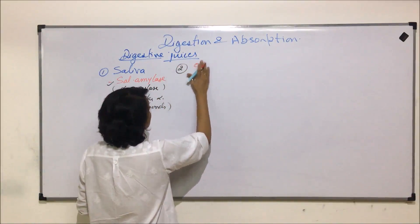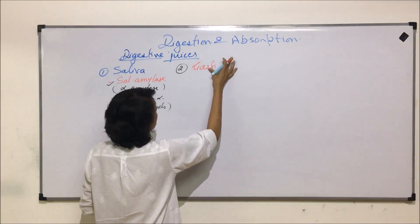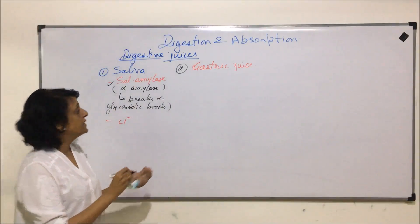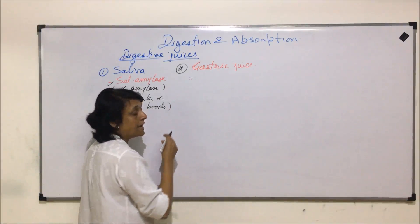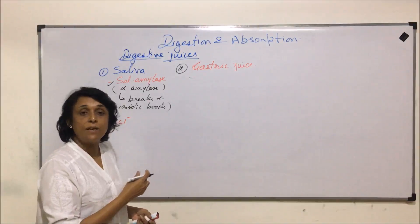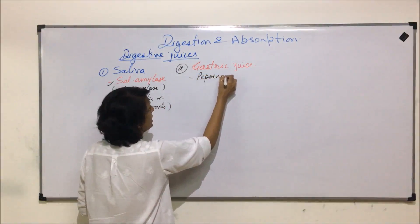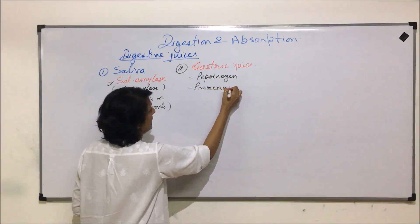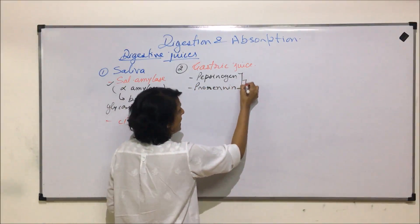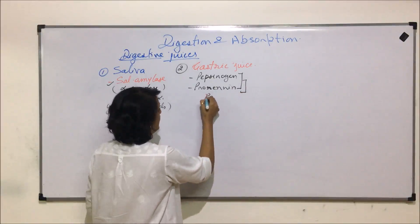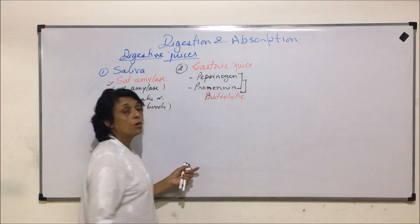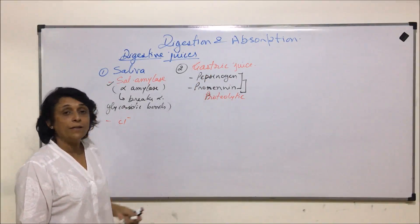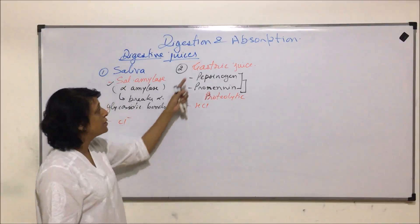The next digestive secretion is gastric juice. In gastric juice, the enzymes are secreted in the form of inactive enzymes or pro-enzymes that need to be activated. These are pepsinogen, which is inactive pepsin, and pro-renin. Both are proteolytic enzymes, meaning they break peptide bonds to help in protein digestion. For their activation, hydrochloric acid is required, which is also present in gastric juice.